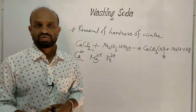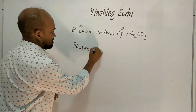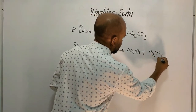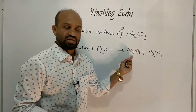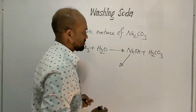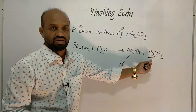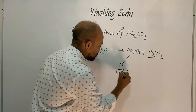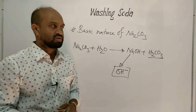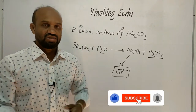Now let's see the basic nature of sodium carbonate. When sodium carbonate is dissolved in water, sodium hydroxide and carbonic acid are formed. Sodium hydroxide is a strong base, so it dissociates almost 100%. But carbonic acid is a weak acid and remains almost undissociated. The solution therefore contains a large amount of hydroxide ions, which is why a solution of sodium carbonate shows basic nature.